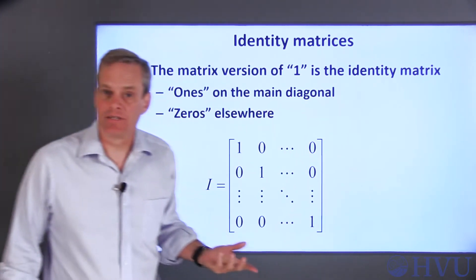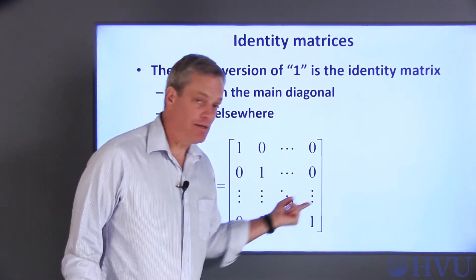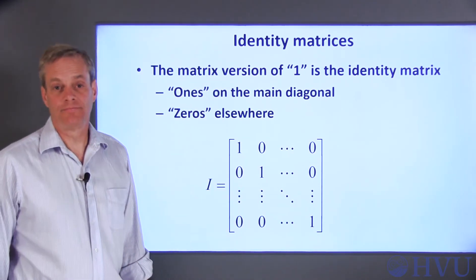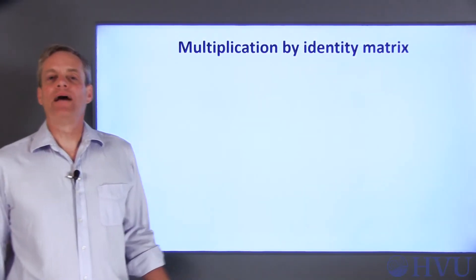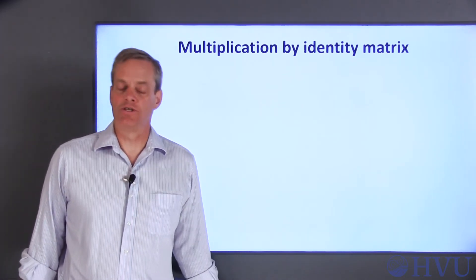An identity matrix is defined as having 1s on its main diagonal, and 0s everywhere else. By definition, if you multiply a number by 1, you get the original number back.